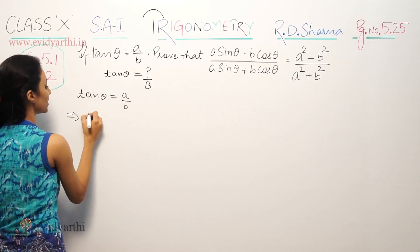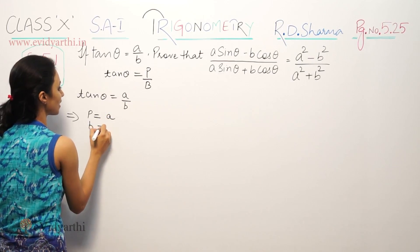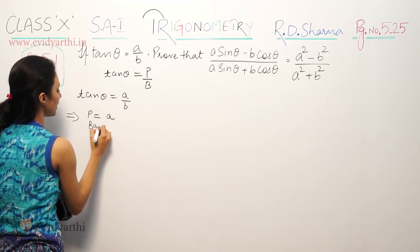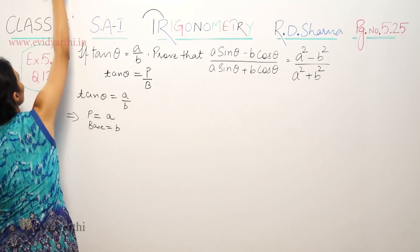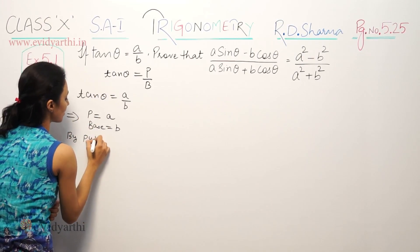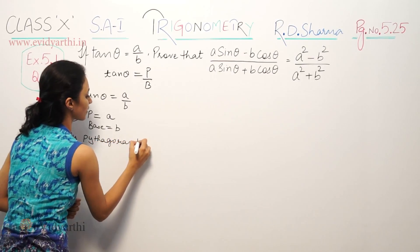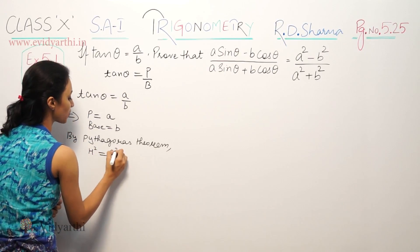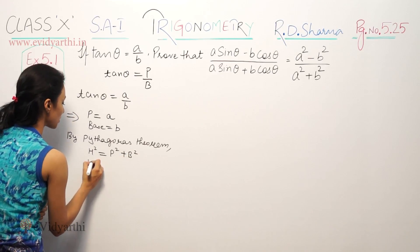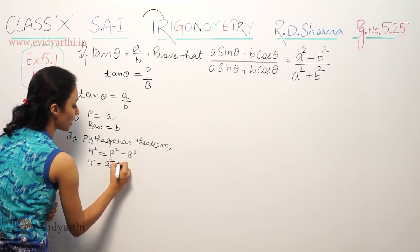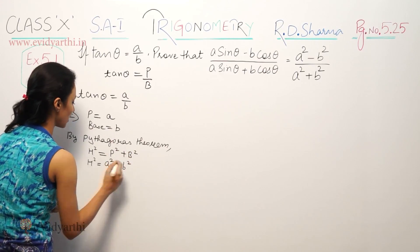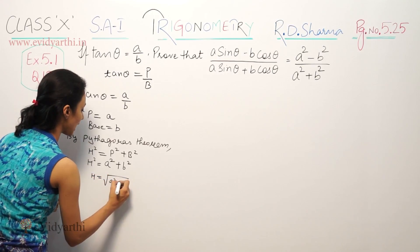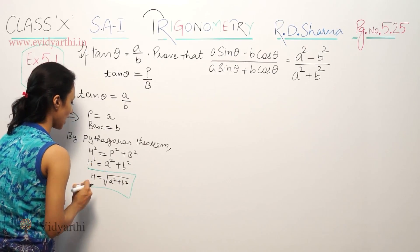This implies that the perpendicular is a and the base is b. We can find the hypotenuse using the Pythagorean theorem: a square plus b square. So h is equal to under root of a square plus b square. This value we have for the hypotenuse.